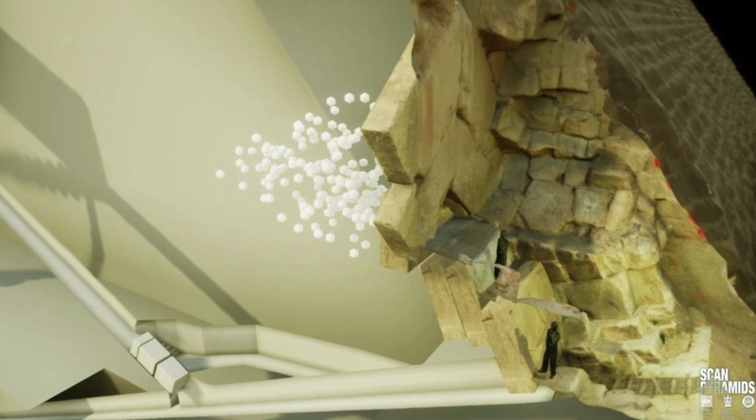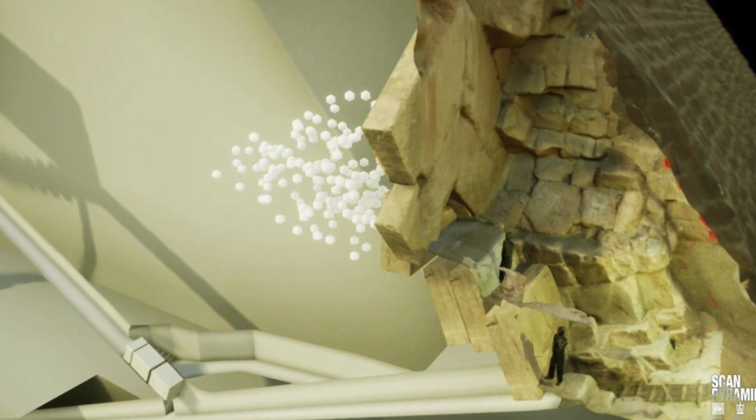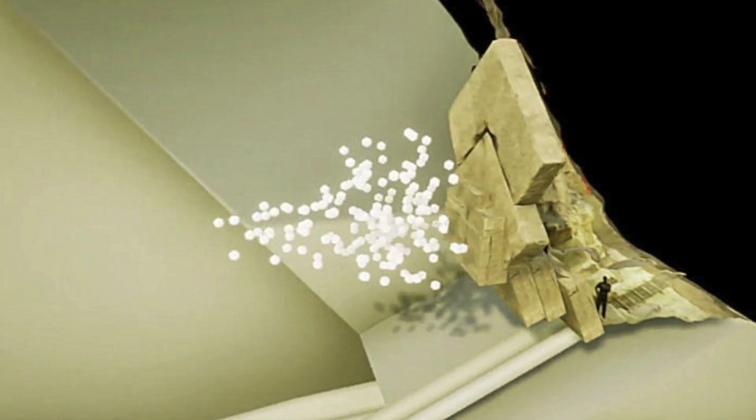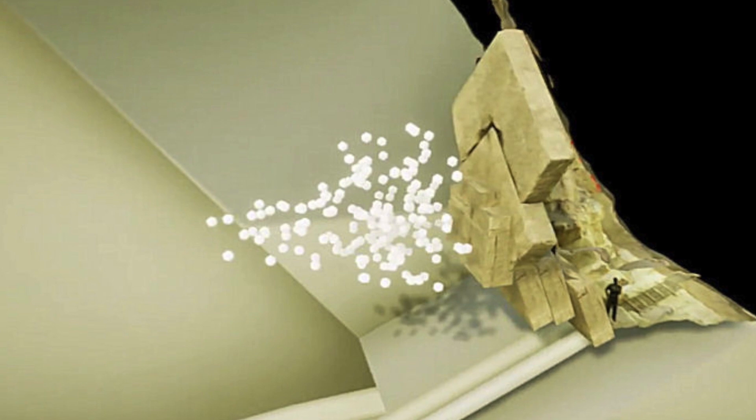There was also a second cavity behind the Great Pyramid's entrance chevron blocks that was reported in October 2016, which I made a video on a number of months ago, yet we have been in the dark for three years ever since its discovery.